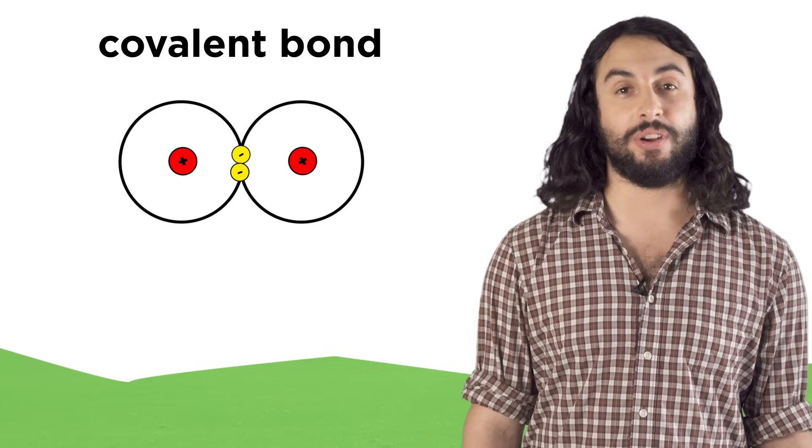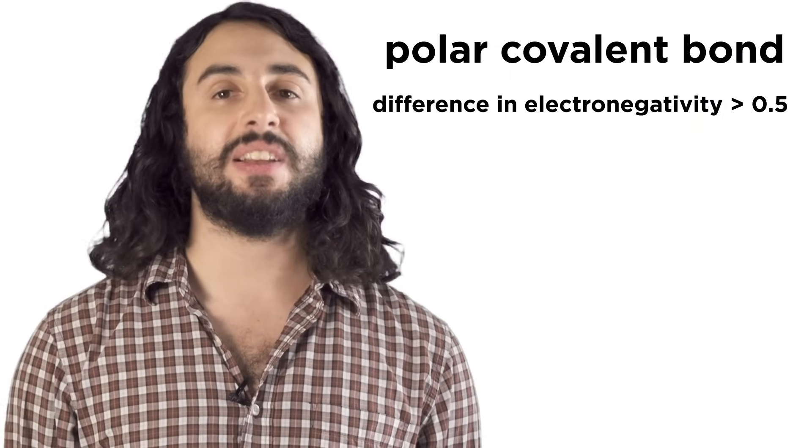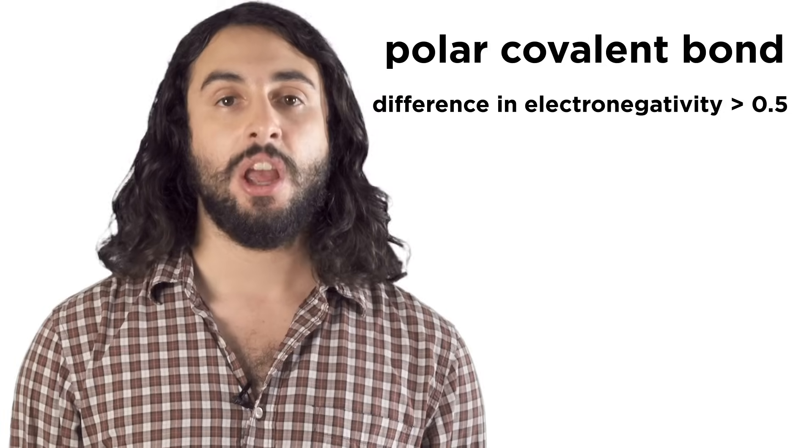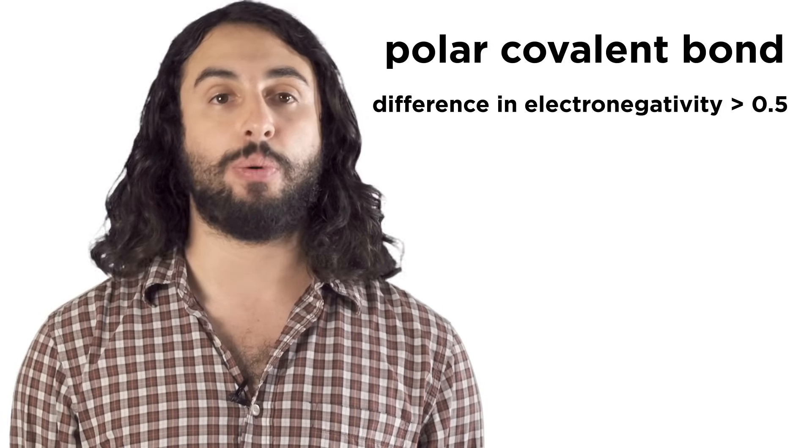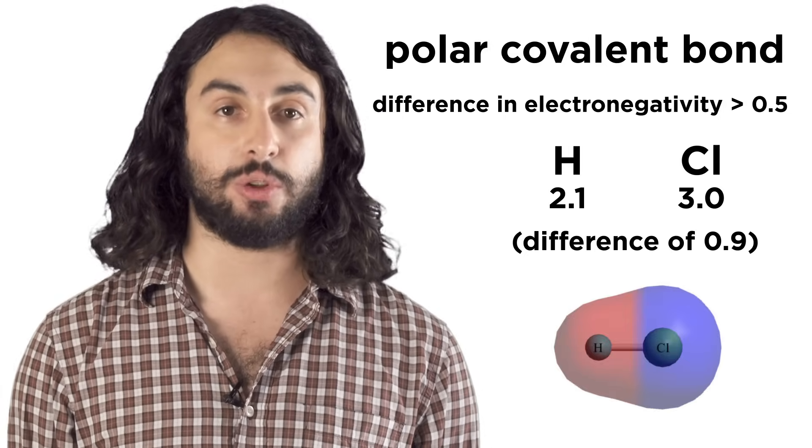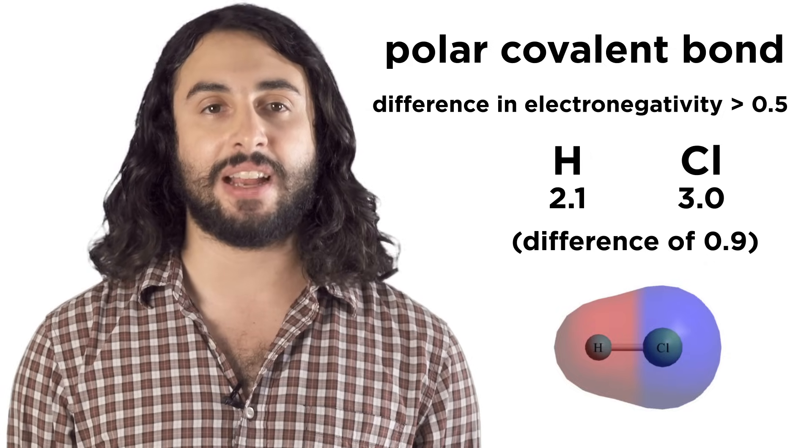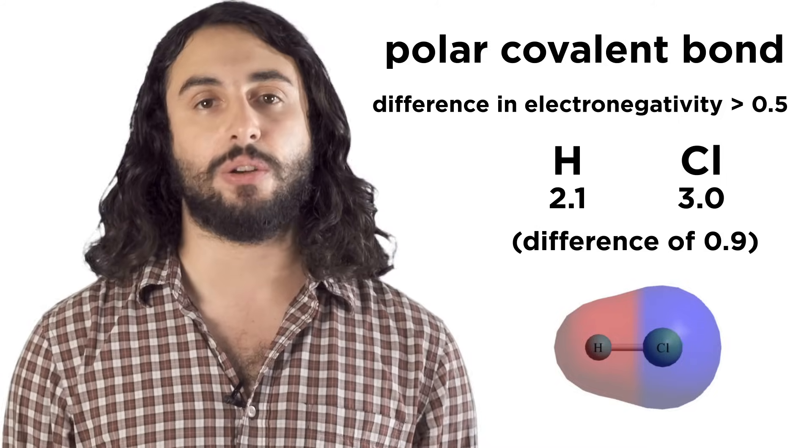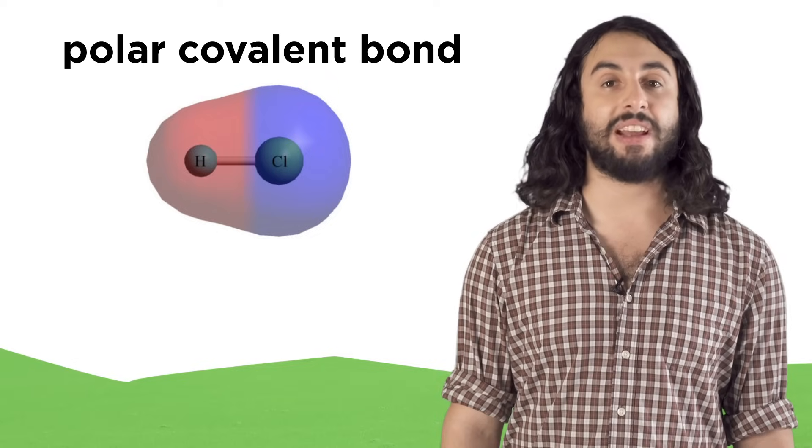Covalent bonds can be polar or nonpolar. If the electronegativity difference between the atoms is not high enough to cause ionization but is at least more than 0.5 or so, like with hydrogen and chlorine, instead of completely stealing the electron, the chlorine will just sort of hog the electrons in the resulting covalent bond.